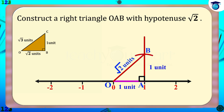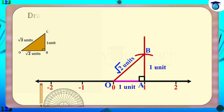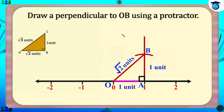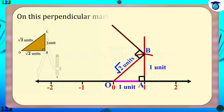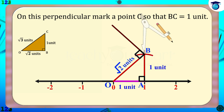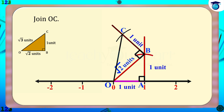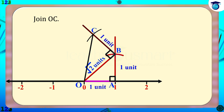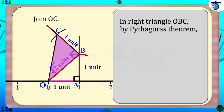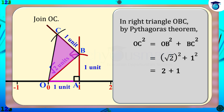To represent root 3 on a number line, the first step is to construct root 2 on the hypotenuse of a right triangle OAB, which we learned in the previous session. Now at B, draw a perpendicular to OB using a protractor. On this perpendicular, mark a point C so that BC equals 1 unit. Join OC to get right triangle OBC. By Pythagoras theorem, OC² = OB² + BC² = (√2)² + 1² = 2 + 1 = 3, therefore OC equals root 3 units.